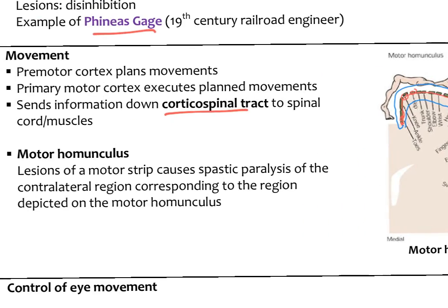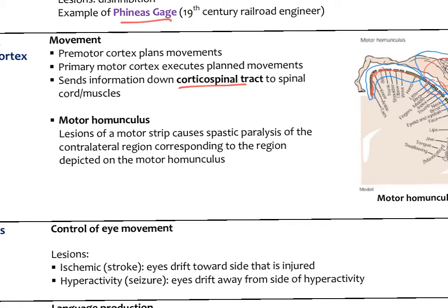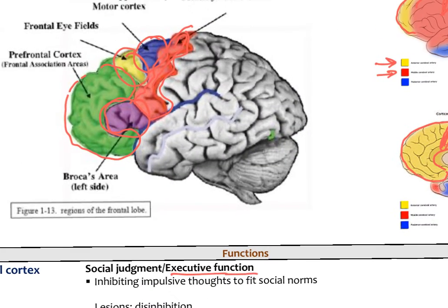This mapping is called the motor homunculus — 'homunculus' meaning a little person — representing a map of the body along that cortical strip. It drapes around the back side in the medial surface as well. There is a motor area on the left hemisphere and one on the right hemisphere; the left hemisphere controls the right side of the body, and the motor area on the right hemisphere controls the left side of the body.